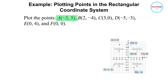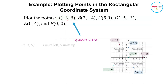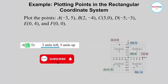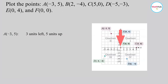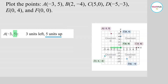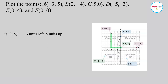For point A, we have negative 3, 5. That means the x-coordinate is negative 3 and the y-coordinate is 5. So negative 3 means 3 units to the left. You always start from the origin — the point 0, 0. With respect to the origin, you move 3 units to the left, and then 5 units up because it's positive 5. So this is point A at negative 3, 5.